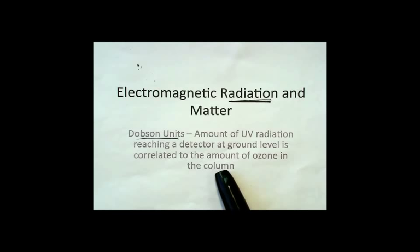So what does all of that mean? The amount of ultraviolet radiation reaching a detector at ground level is correlated to the amount of ozone in the column. What that means is the less ultraviolet radiation that reaches the detector that has been correlated by this unit to the amount of ozone present. So ultraviolet light must be interacting with ozone.